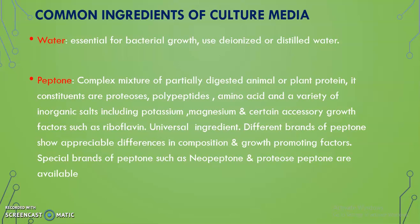The common ingredients of culture media are water — very essential for bacterial growth; we use distilled water. Then peptone: a complex mixture of partially digested proteins, which may be animal or plant protein. The constituents are proteases, polypeptides, amino acids, and a variety of inorganic salts including potassium, magnesium, and certain accessory growth factors such as riboflavin. It is a universal ingredient of almost all culture media. Different brands of peptone are available showing slight differences in composition and growth promoting factors. Special brands such as neopeptone and proteose peptone are available.